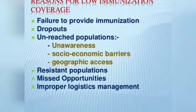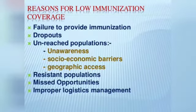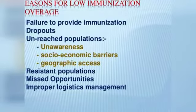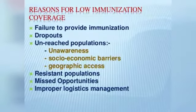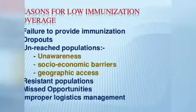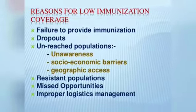Reasons for low immunization coverage include: failure to provide immunization at planned outreach, sub-center, or PHC sites; dropouts — children who receive one or more vaccinations but do not return for subsequent doses; unreached populations — children whose parents do not know about immunization or face socioeconomic barriers; lack of geographic access — children who live too far from a health center to complete a full immunization schedule; resistant populations — parents who do not believe in immunization services; and missed opportunities — children who visit a health center for another reason but are not screened for immunization.